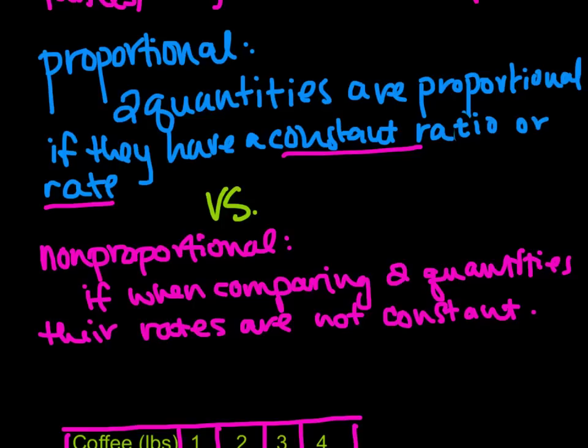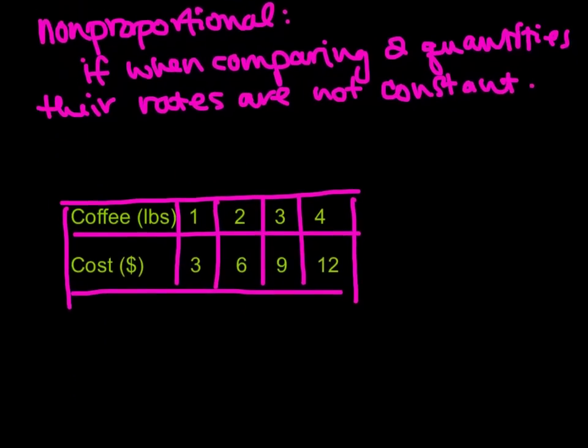For something to be non-proportional or not proportional whatsoever, when you compare two quantities, their rates are not constant. So it's super important when you do these problems that you check multiple quantities to see if some of them are proportional, or if all of them are proportional, or if they are not proportional.